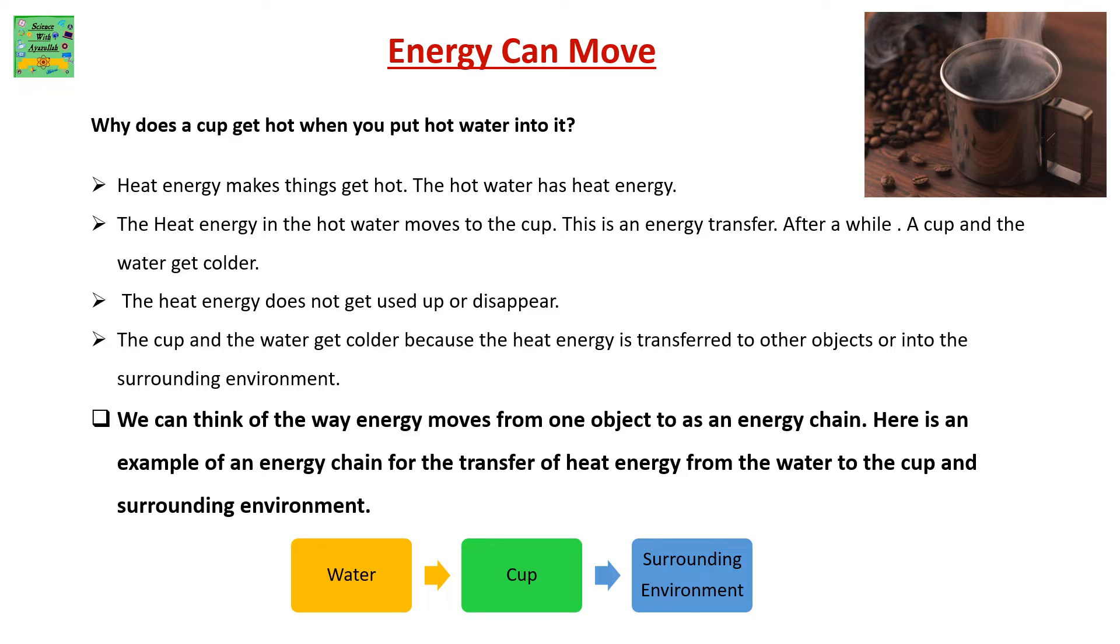We can think of the way energy moves from one object to another as an energy chain. Here is an example of an energy chain for the transfer of heat energy from the water to the cup and surrounding environment: water, cup, surrounding environment.